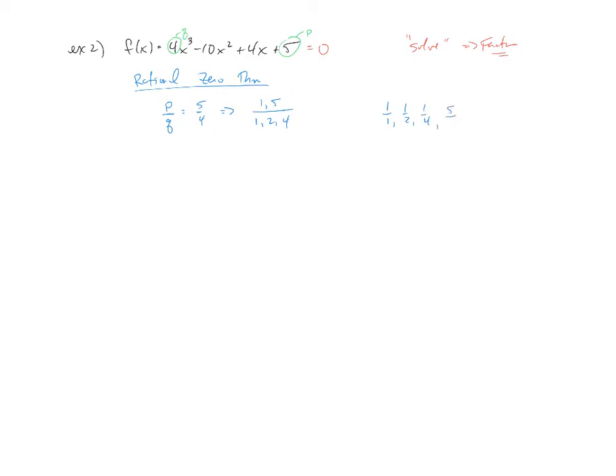Similarly, we would take the 5 on top and we'd pair it with all of the numbers below. So 5 over 1, 5 over 2, and 5 over 4. This list right here, in addition to having the plus or minus as an option, would be the list of possible rational zeros for the given polynomial.